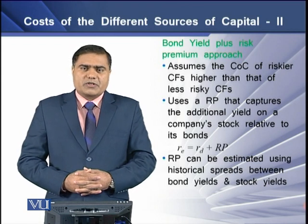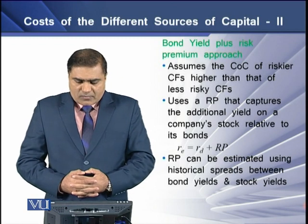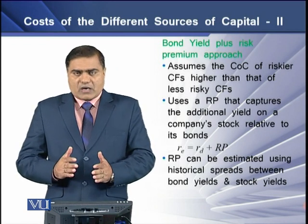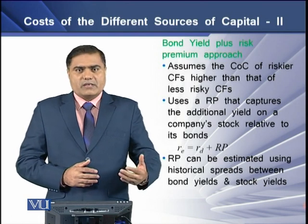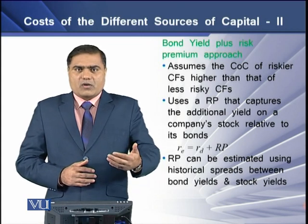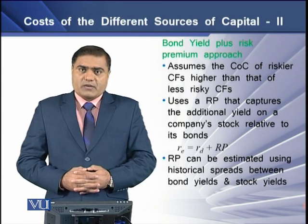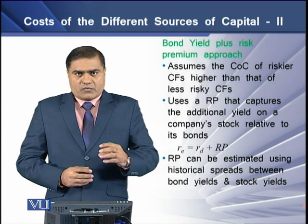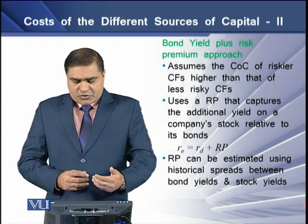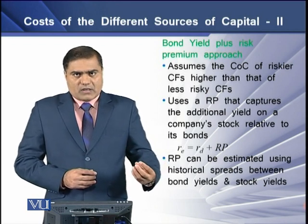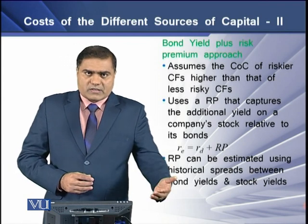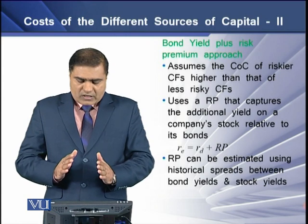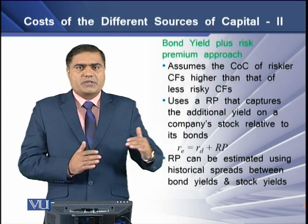The third approach to determine cost of equity is the bond yield plus risk premium approach. This approach assumes that the cost of capital for riskier cash flows is higher — the higher the riskiness, the higher the cost of capital. We use a risk premium that captures the additional yield on a company's stock relative to its bonds, determining cost of equity as the company's cost of debt plus the risk premium. This risk premium can be estimated using the historical spread between bond yield and stock yield of a particular corporate firm.